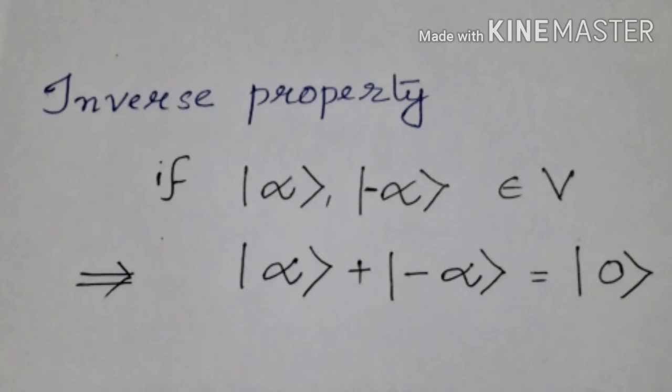If ket vector alpha belongs to V, then ket vector alpha plus ket vector minus alpha equals ket vector zero.